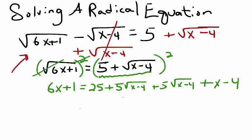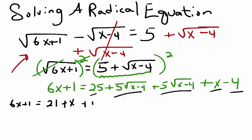Now I'm going to combine like terms. On my left I have 6x plus 1. On the right, the constants 25 and negative 4 combine to give 21. I have x as a first-degree variable. And the two radicals — 5 square root of x minus 4 plus 5 square root of x minus 4 — combine to give plus 10 square root of x minus 4.